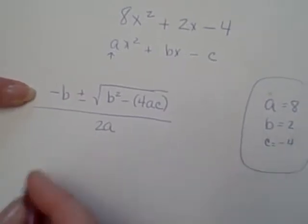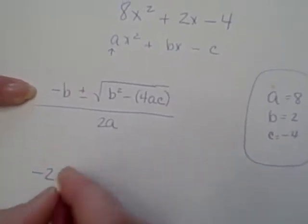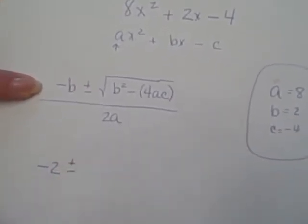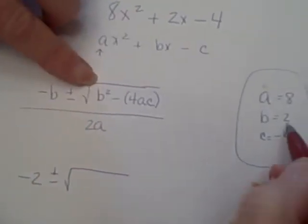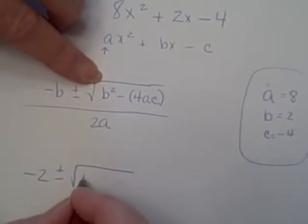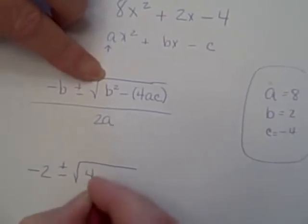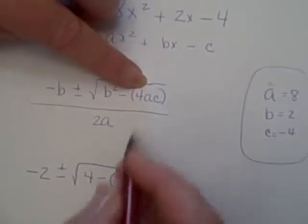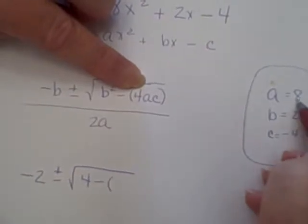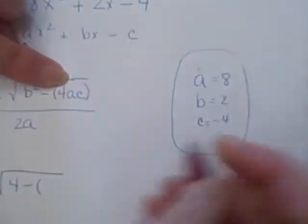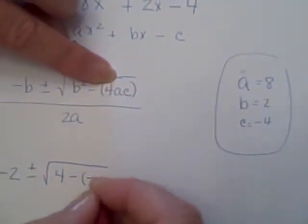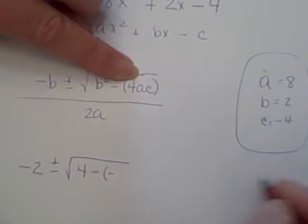The opposite of b, the opposite of 2, is negative 2, plus or minus the square root. b squared is 2 squared. 2 squared is 4, minus 4 times 8, which is 32, times negative 4, which is negative 128.